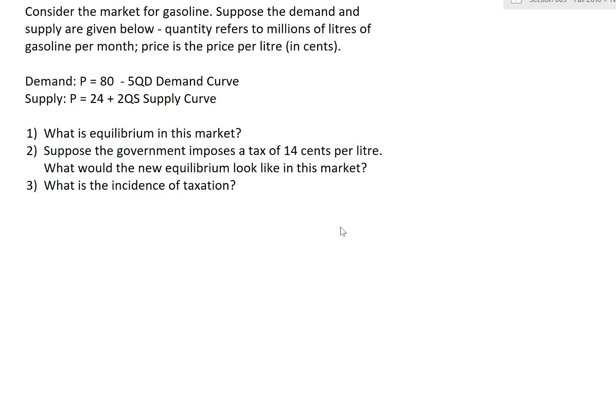In this video we're going to review the algebra of supply and demand as well as the algebra of excise taxes. The question considers the market for gasoline, where demand and supply are given, quantity refers to millions of liters of gasoline per month, and price is per liter in cents. The supply curve is P equals 24 plus 2QS, giving us a downward sloping demand curve and an upward sloping supply curve following the laws of demand and supply.